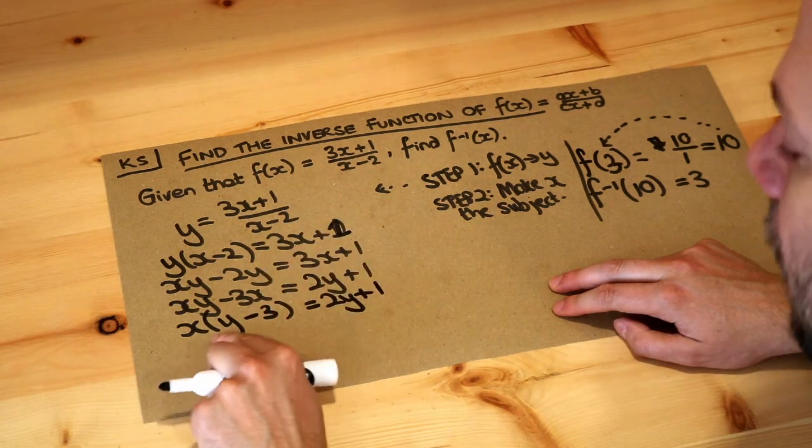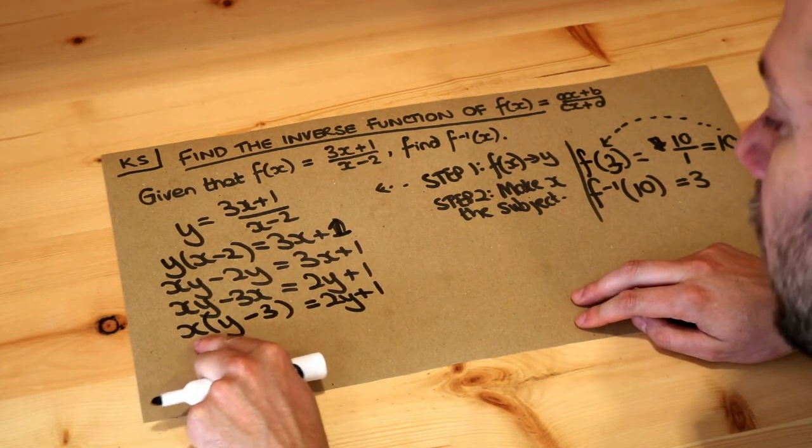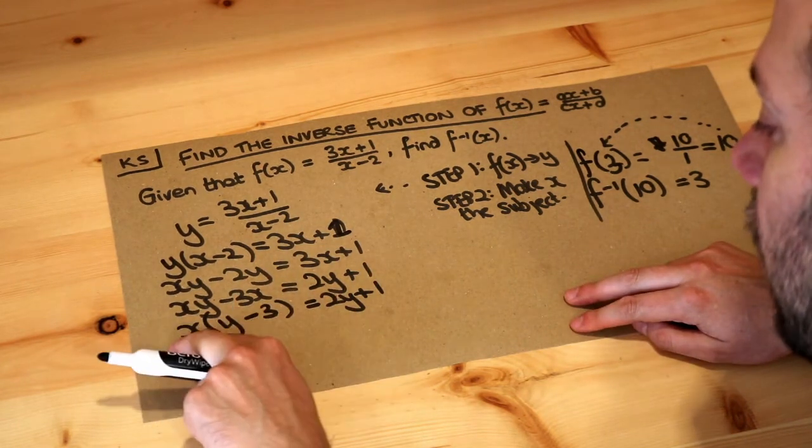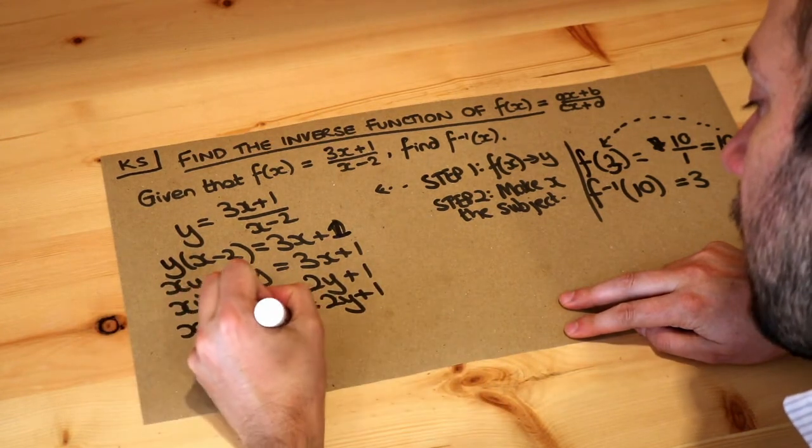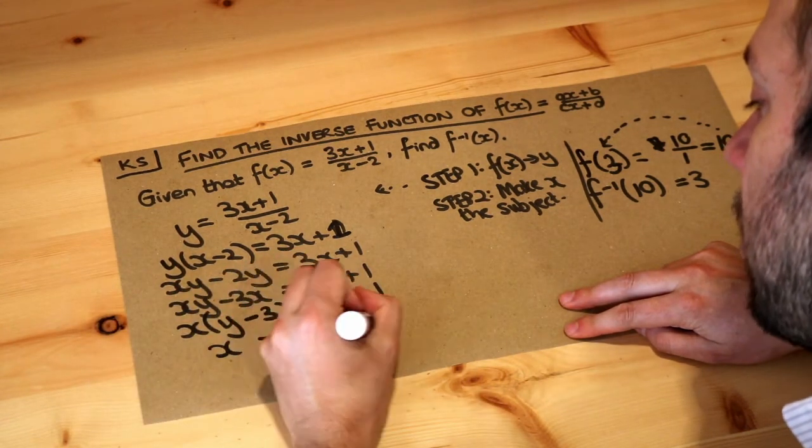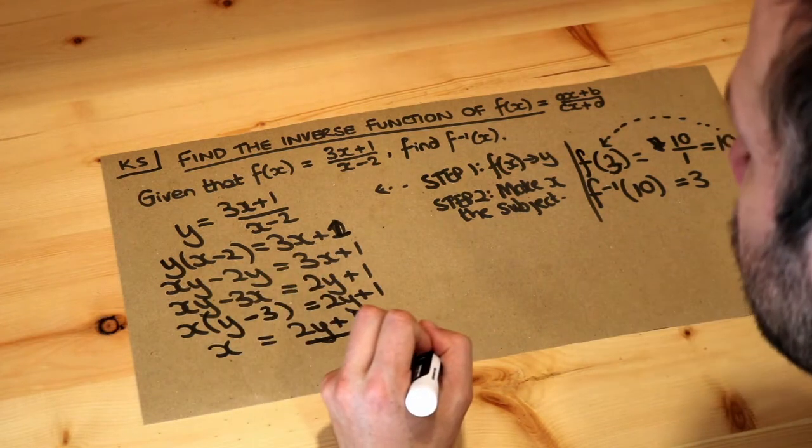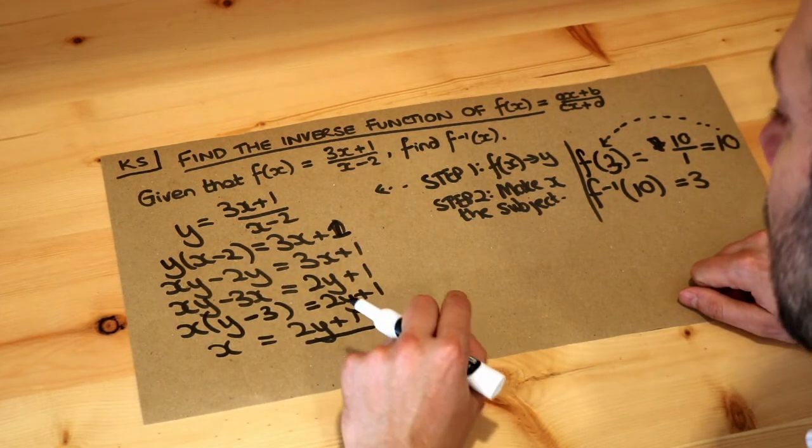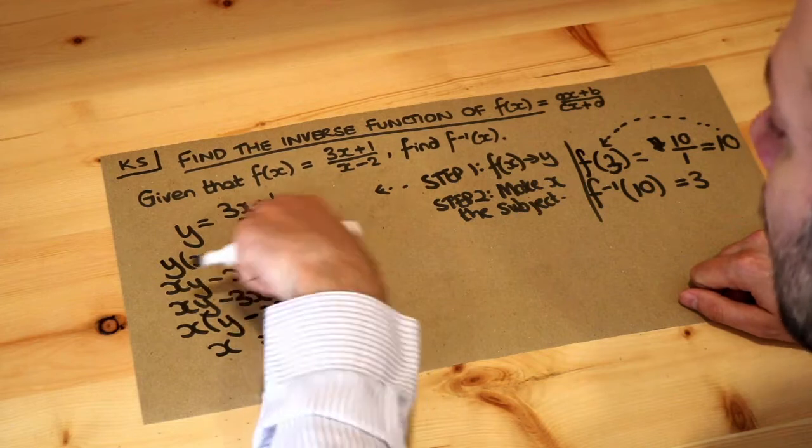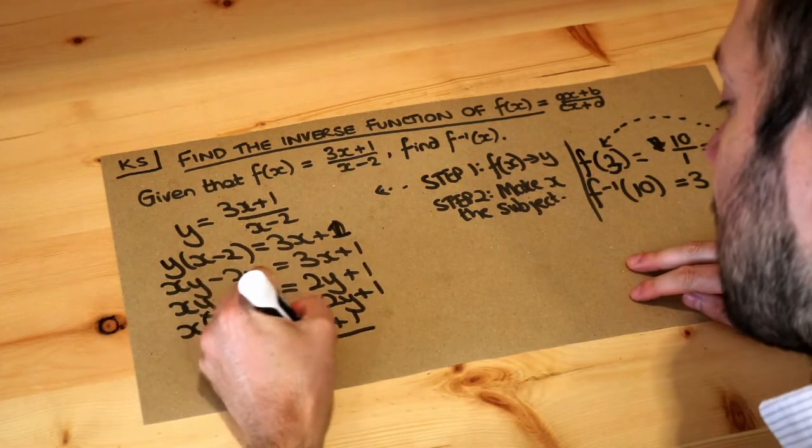And because I factorized the x out I've now only got one x in the equation so I can divide by this y minus 3. And if this doesn't seem like a familiar method to you please watch my video first on changing the subject where the subject appears multiple times and within a fraction—I've got a video dedicated to that.